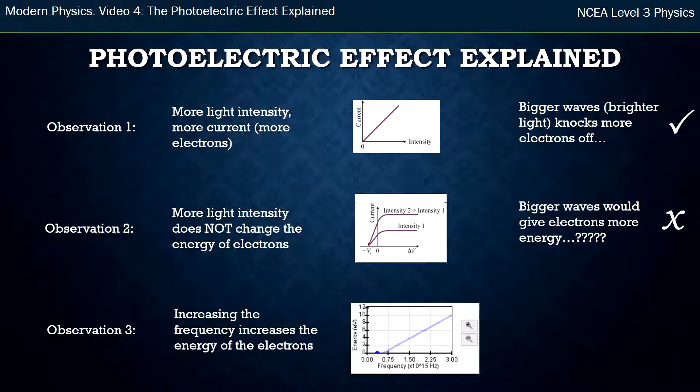The last observation was that if we change the frequency of the waves or the wavelength of the waves, that changed the energy of the electrons that were released from the metal. And a higher frequency led to higher energy. Now thinking about that with waves, it wasn't really explainable. Changing the frequency didn't really predict that the electron energy would change at all. So there's another one that wasn't explainable using the wave model.